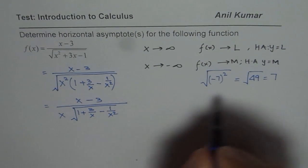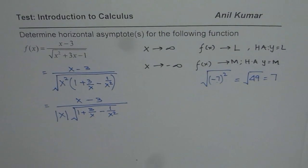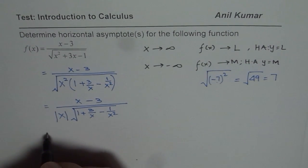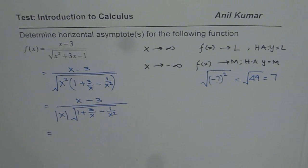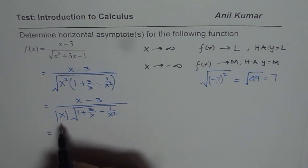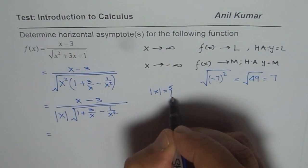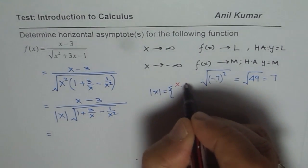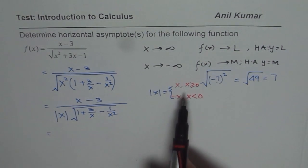This makes a huge difference and is why students sometimes get the wrong answer for this question. Now let us define absolute value of x. Absolute value of x equals x if x is greater than or equal to 0, and equals negative x when x is less than 0. That is the piecewise definition of absolute value of x — remember this as we move forward.